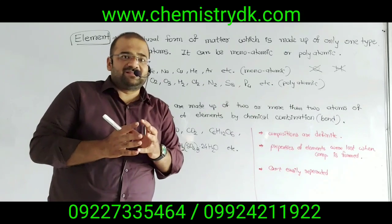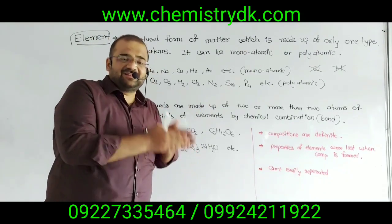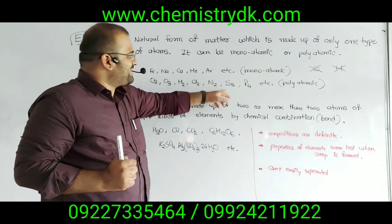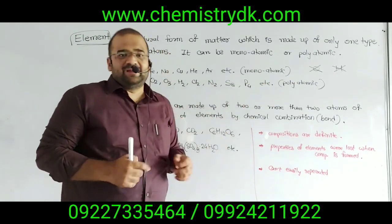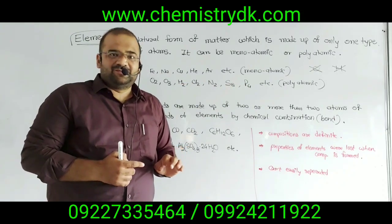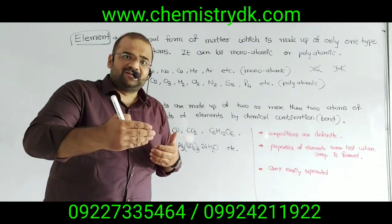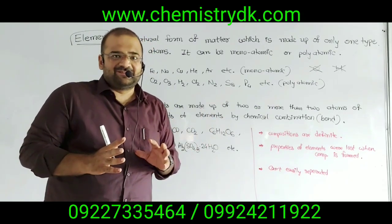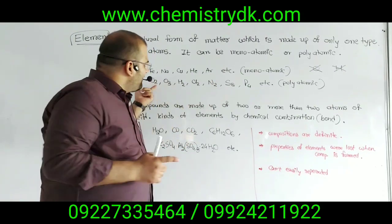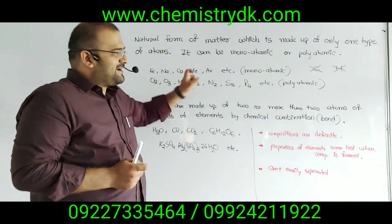Remember, some atoms exist in monoatomic form while some elements exist in polyatomic form — it depends on the nature of the element. Examples of polyatomic elements: O2, O3, H2, Cl2, N2, S8, P4. You will learn about which elements are monoatomic and which are polyatomic over the next two years of study, so don't worry about memorizing all of them right now. It is just an example at this stage — some are monoatomic, some are polyatomic.